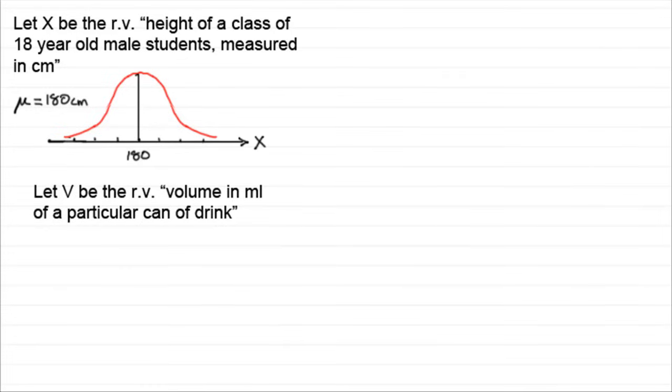If you were buying cans of drink, the distribution would be something like this for the volume. It would be centered around the mean. But notice one difference between this and this distribution. Notice how squashed in this is towards the mean compared to this. And that's because most of the cans that you would pick out would have much the same volume. They wouldn't have exactly the same volume, but they'd be very close to that volume.